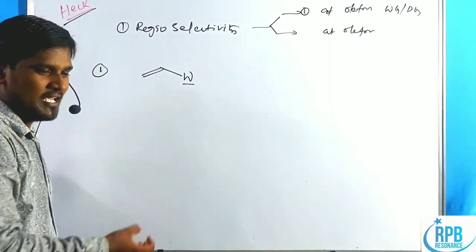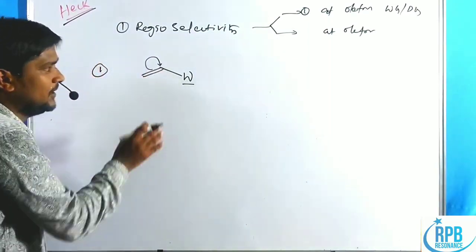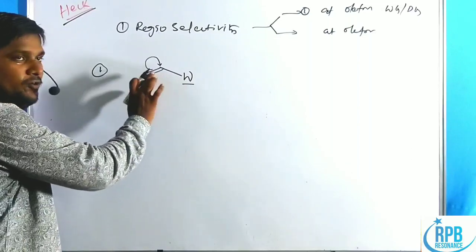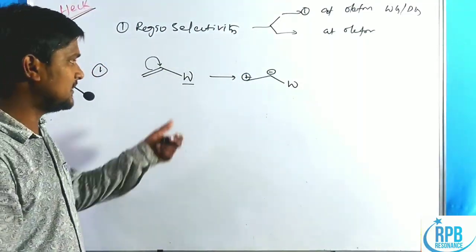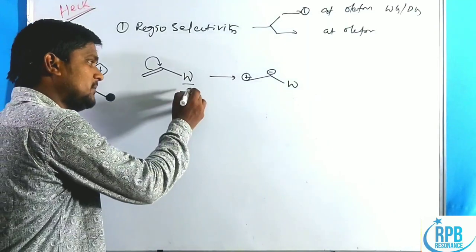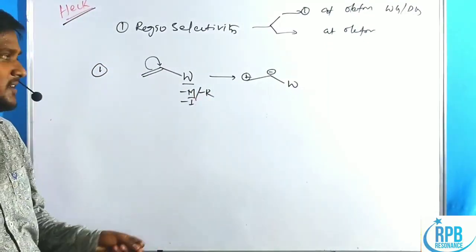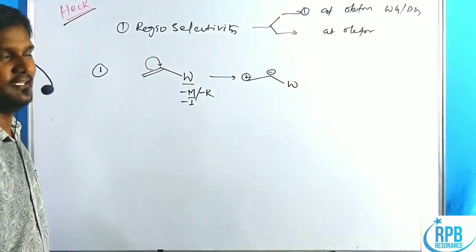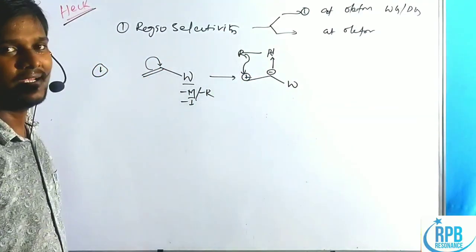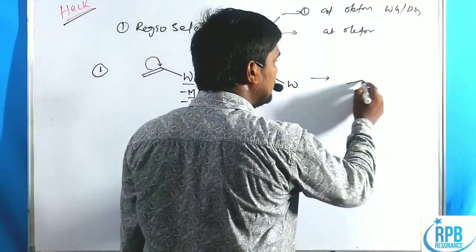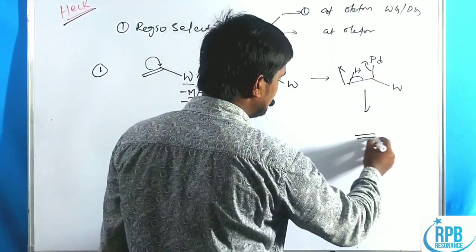For an electron-withdrawing group, it pulls the electron cloud towards itself. Due to the −M, −R, and −I effects, the bonded electrons shift towards the electron-withdrawing group side. The R group from palladium attacks the cation side (terminal carbon), creating the complex W-R-Pd, and after syn elimination of palladium, the olefin product is obtained.